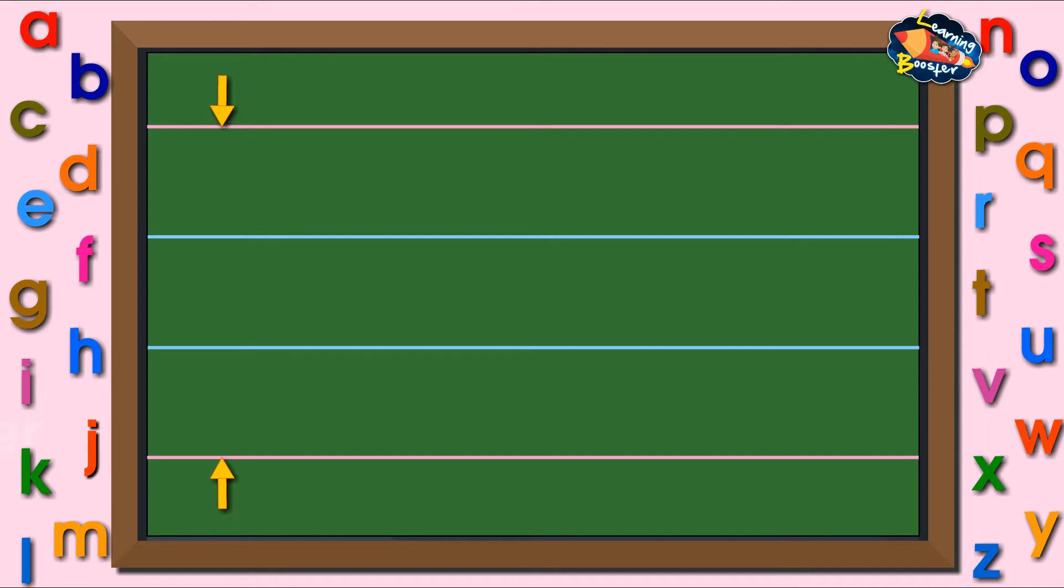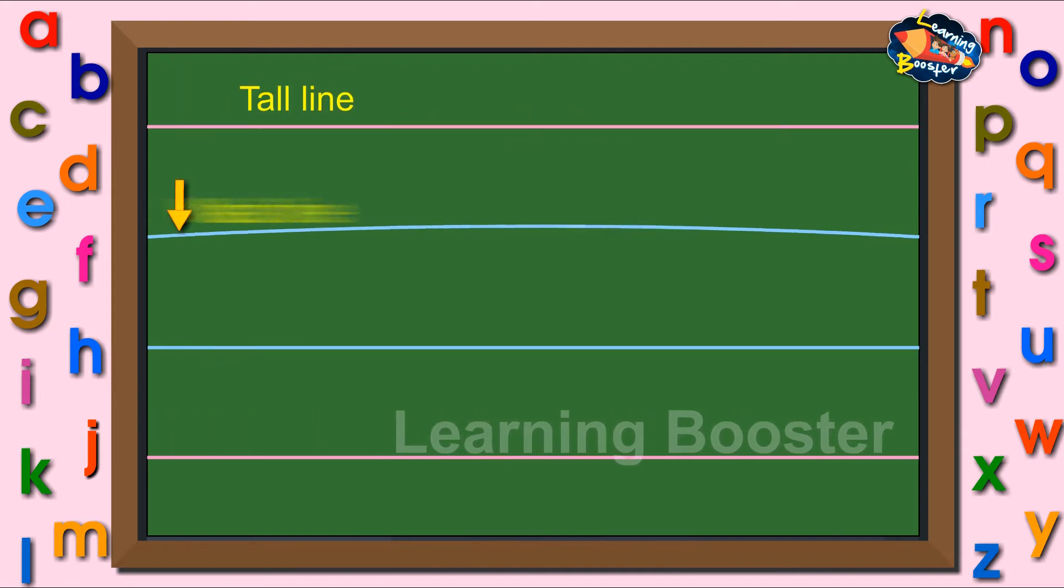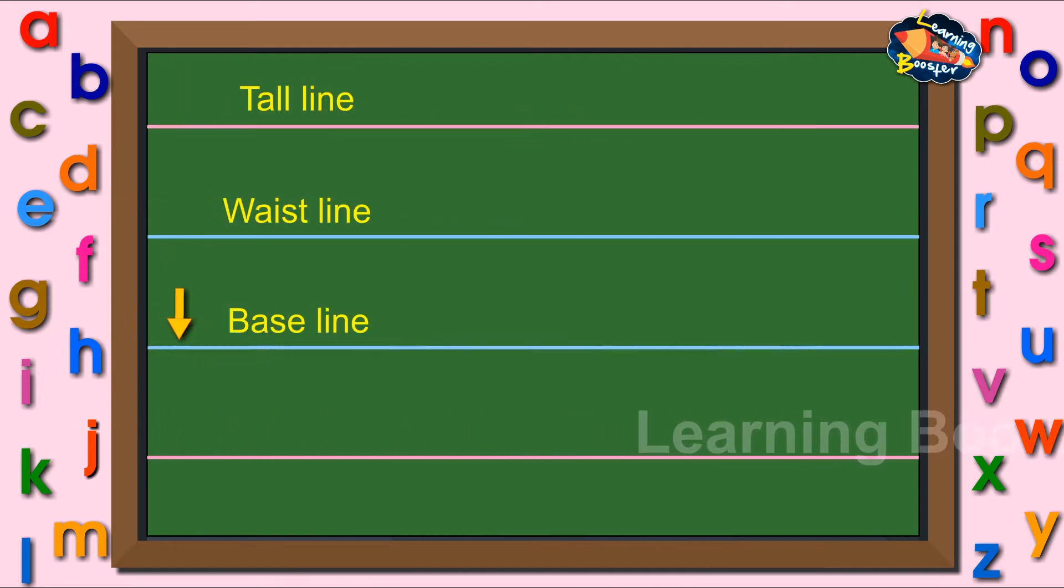Look at the two red and two blue lines. Each has a name: tall line, base line, base line, and tail line.